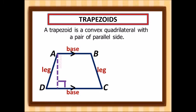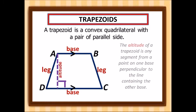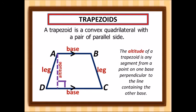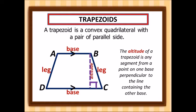This is what we call the altitude. The altitude of a trapezoid is any segment from a point on one base perpendicular to the line containing the other base. It could be on the left side, the center, or the right side, as long as it is perpendicular to the other base.